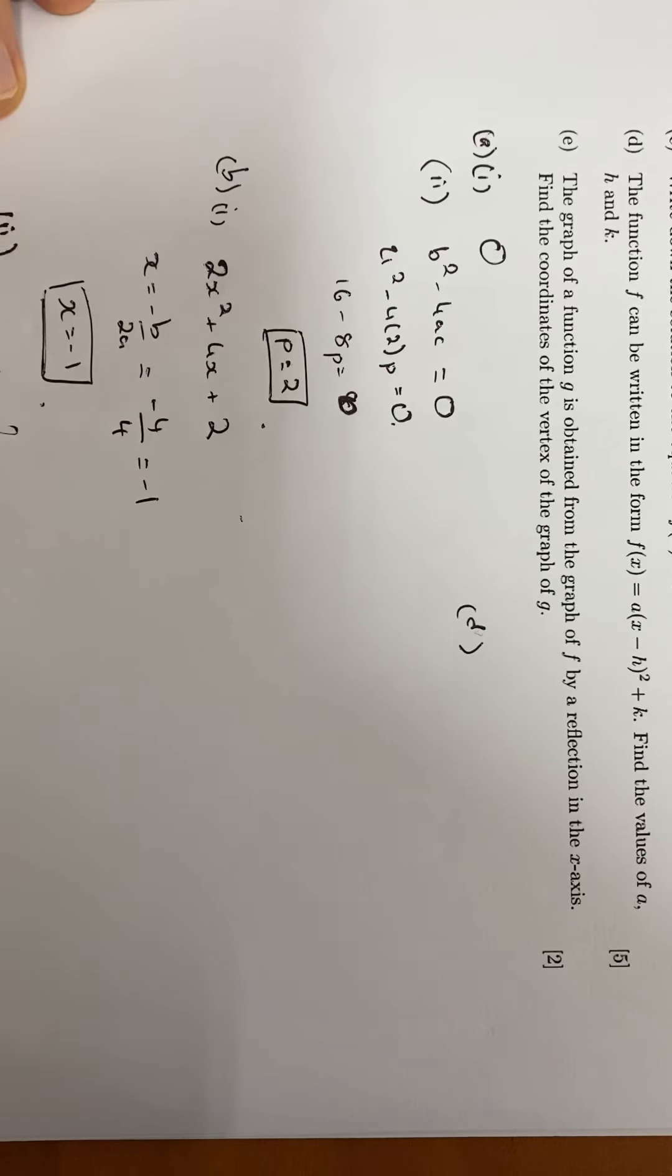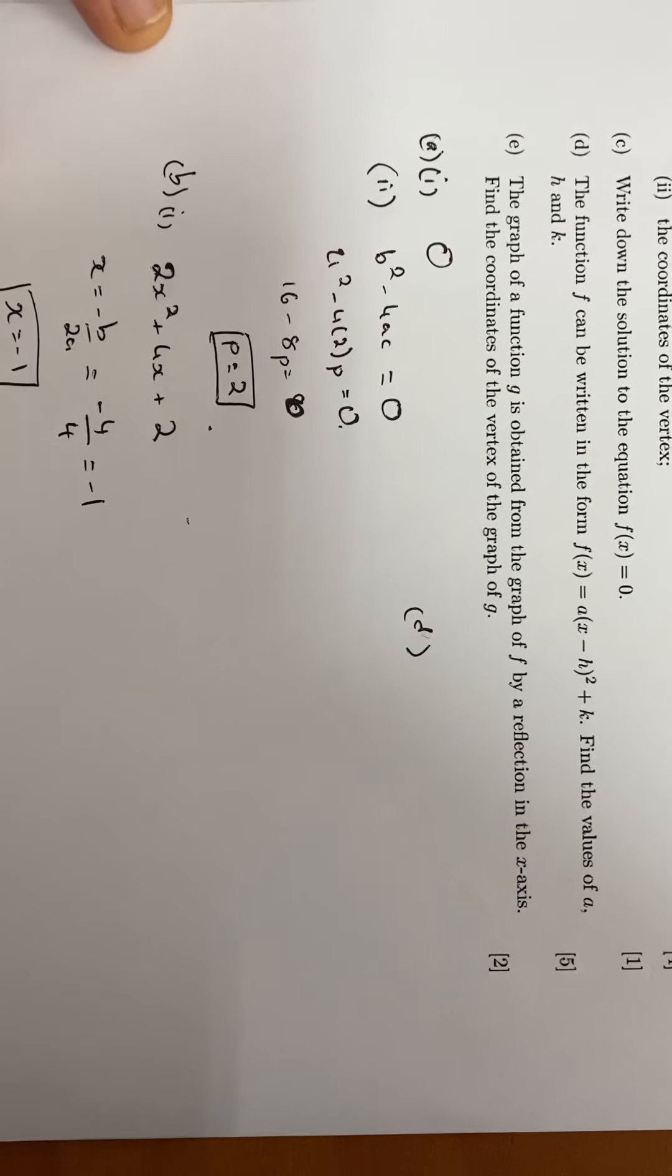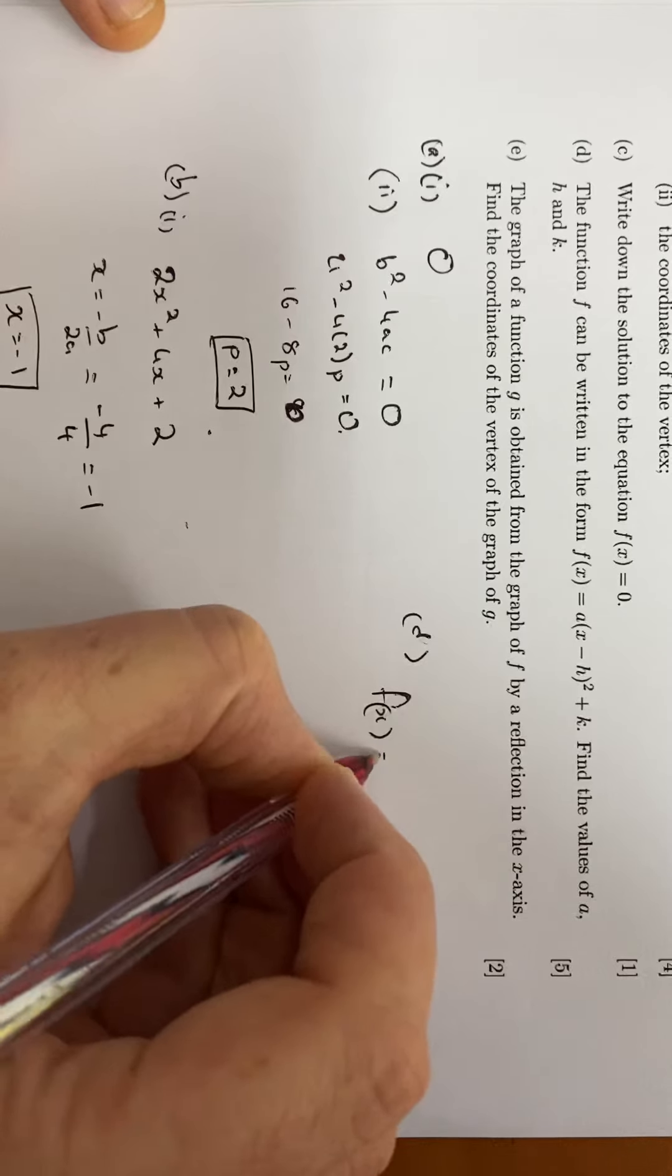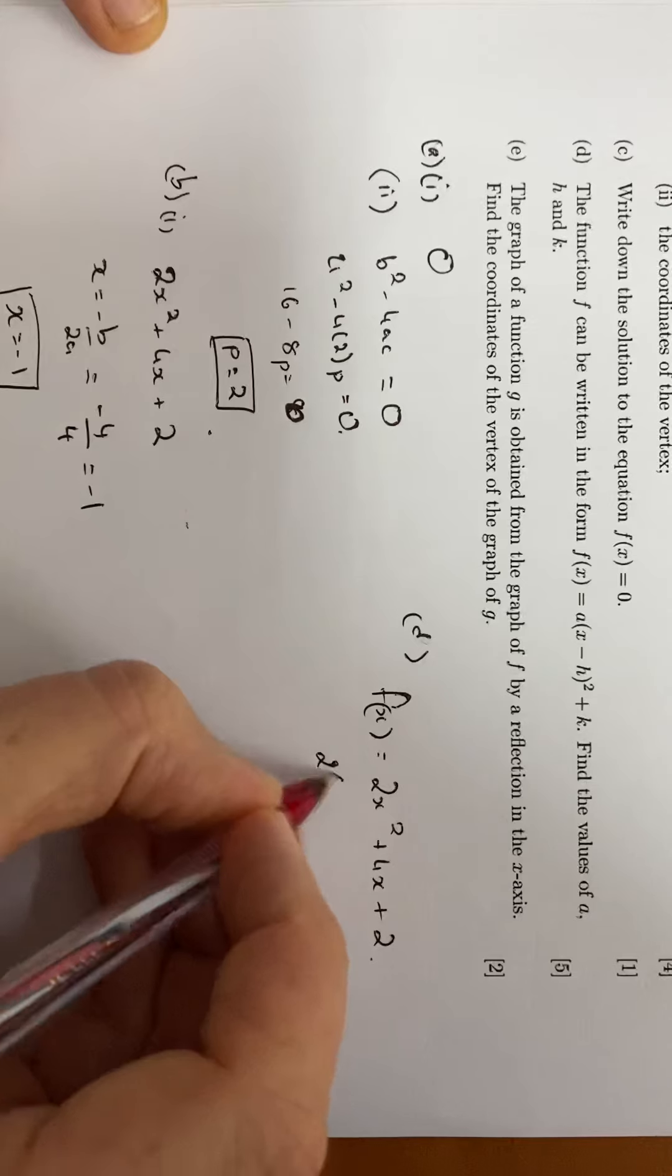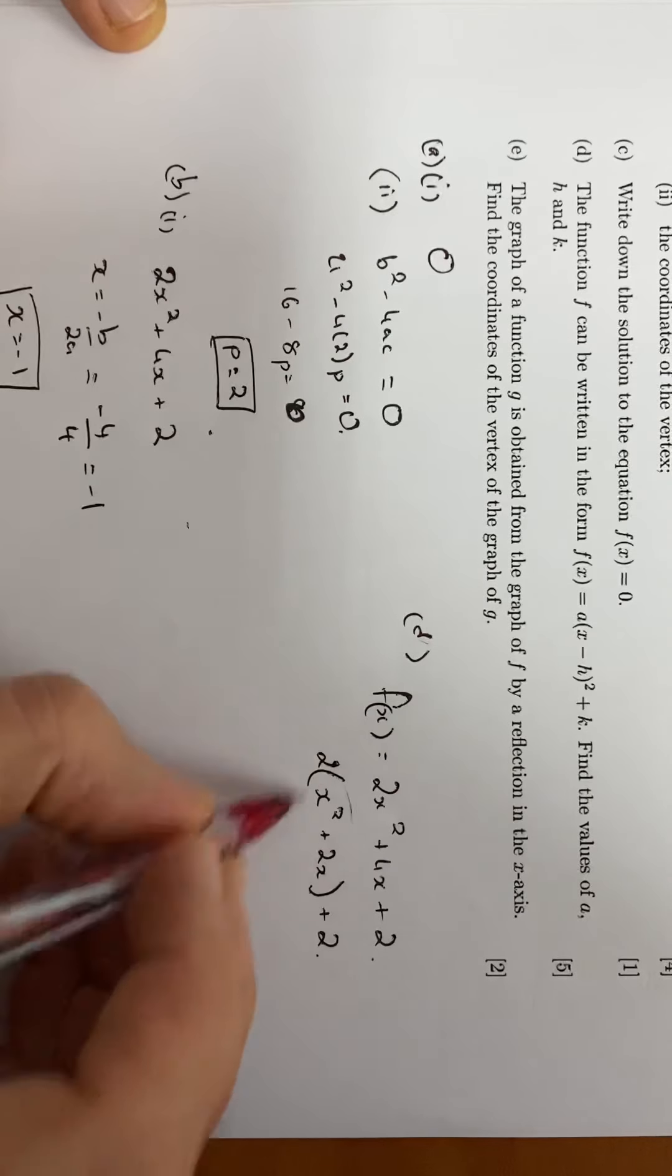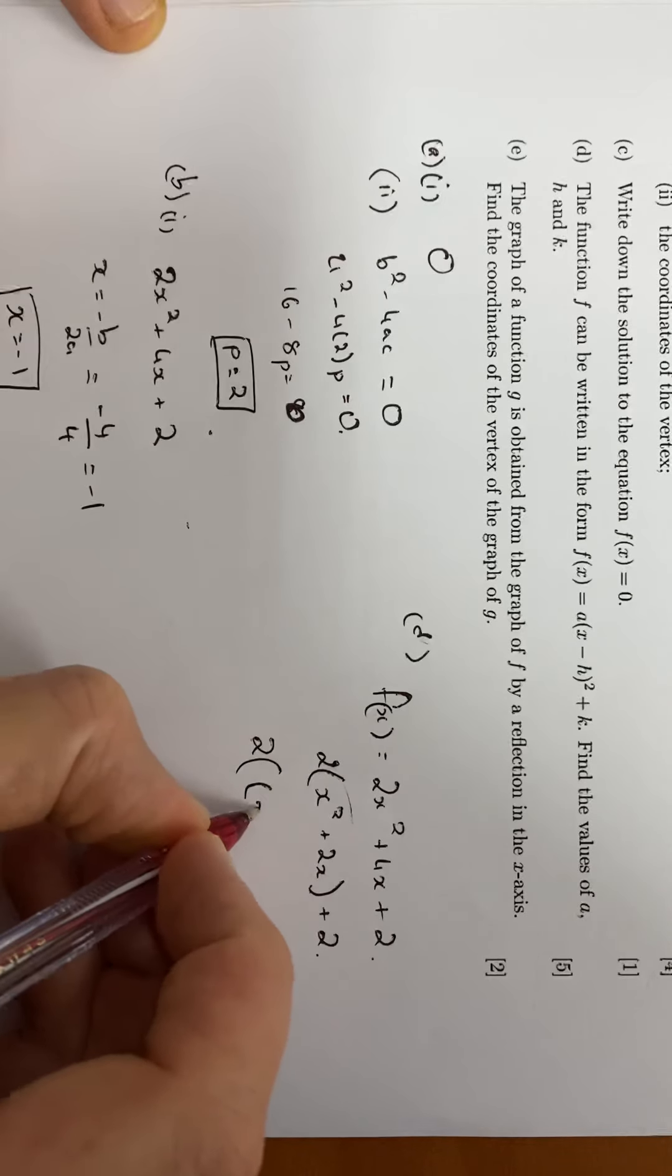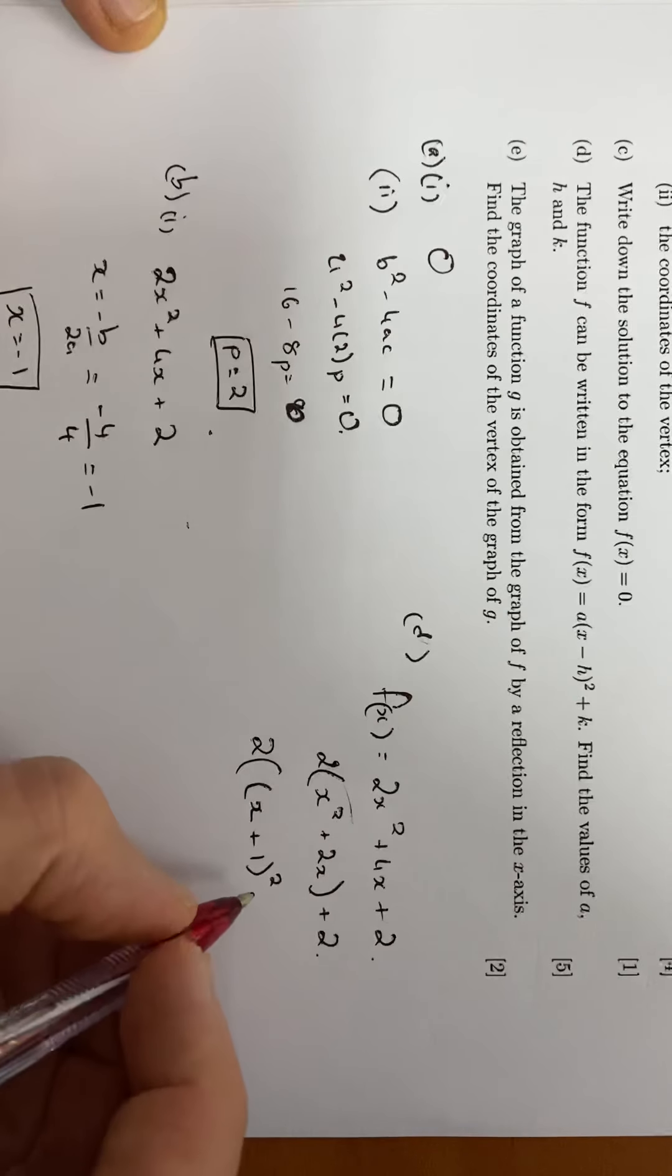Part d, the function f can be written in that form. That looks like difference of two squares or completing the squares method. Find the values of a, h, and k. We should be able to complete the square at this stage. I'm going to say that's 2 times x squared plus 2x plus 1. Let's make that into a square. That's 2 times x plus 1 squared. That's going to be our thing to be squared. I think I've added one to the equation, so I need to get rid of that.